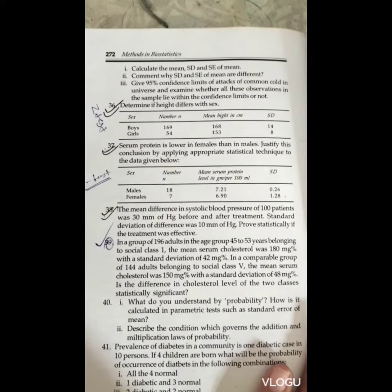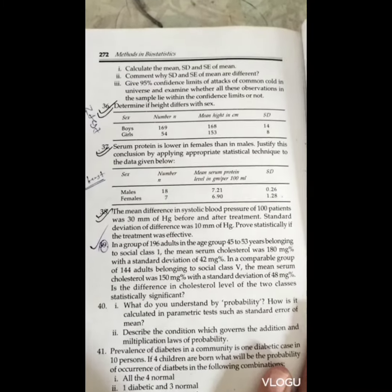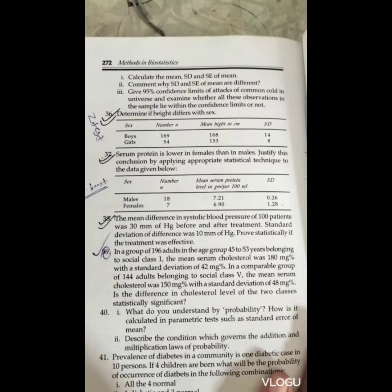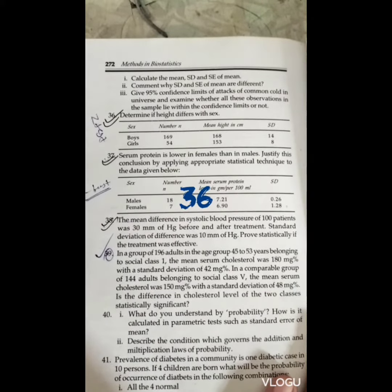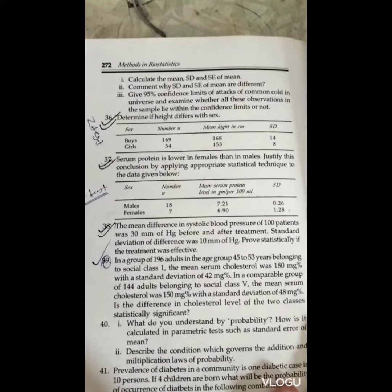Welcome to my channel again for past statistics. Today we are going to do sum number 36 which is very much easy. We have given the genders of boy and girl, number of observations for boy which is 169 and for the girl which is 54.